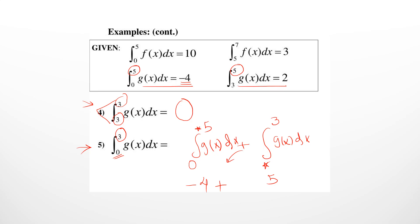From 5 to 3, g(x) dx is not directly given — you are given 3 to 5. The positions of 5 and 3 are changed, so apply the sign-change rule and use negative 2. Now -4 plus -2 gives an answer of -6. It's not very difficult — you just have to practice a lot to solve such questions.